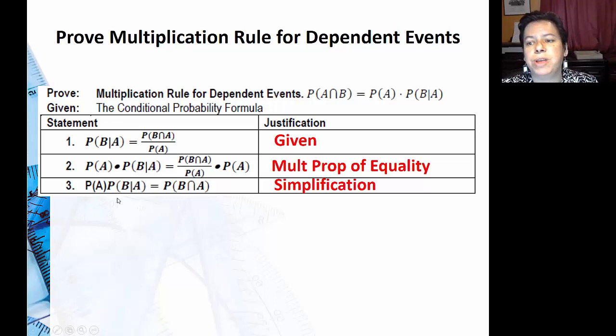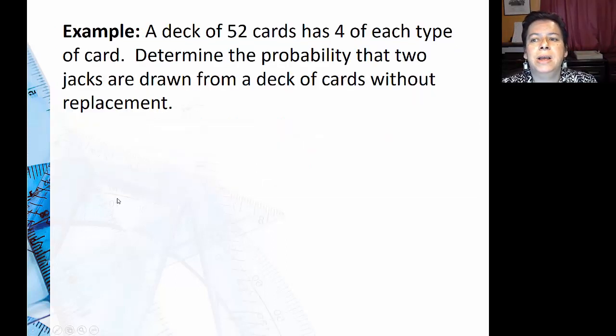In this example, I have a deck of 52 cards. A deck has four of each card, in this case four jacks. So I'm going to determine the probability that two jacks are drawn from a deck of cards without replacement.